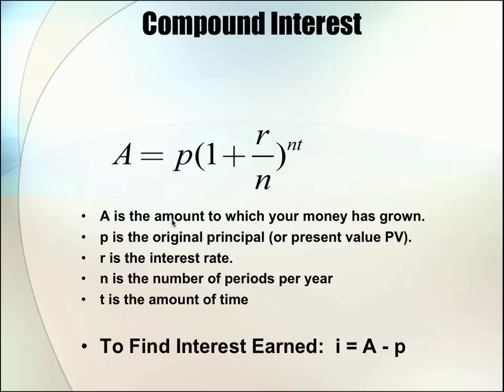Now P right here is the original principal that you invest. Sometimes this is also called the present value or PV. And then it's going to be times 1 plus R over N. R is going to be your interest rate. And remember you always want to change this to a decimal. N is the number of periods per year. If it's compounded daily, monthly, or annually, you can determine what N is going to be. And then this is all going to be raised to the power of N times T. So that number of periods in a year times the amount of time, usually in years.